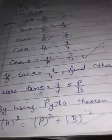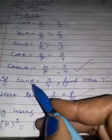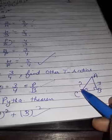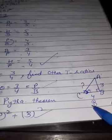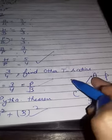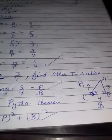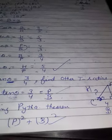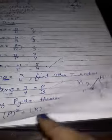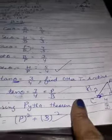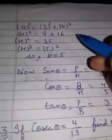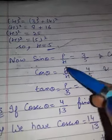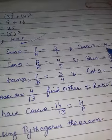Firstly we will find the third side using Pythagoras theorem: H squared equals P squared plus B squared. Theta is working as reference angle — I have taken it on the downside. This is my B, this is my P, this is my H. After applying Pythagoras theorem: 3 squared plus 4 squared gives 25, which is 5 squared, so H is 5.